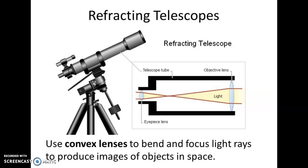The first tool we're going to talk about is refracting telescopes. A refracting telescope uses convex lenses to bend and focus light rays to produce images of objects in outer space.